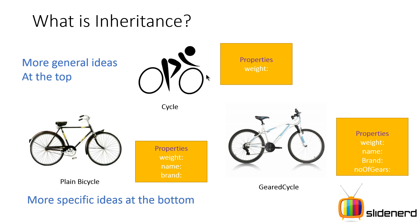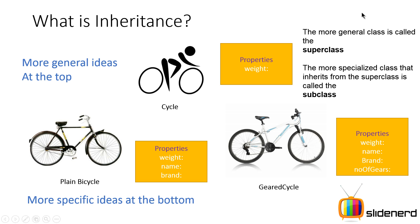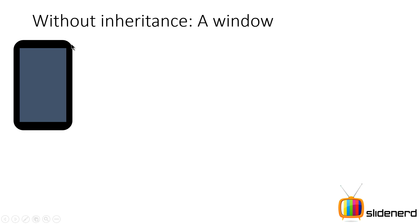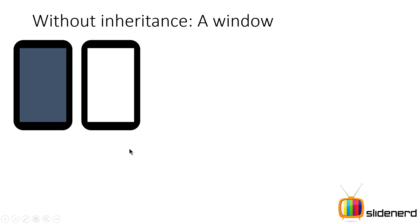Now let me show you a clear example of what happens without inheritance using a real-world example. I have my Android phone — or any phone that runs Java. This phone is currently showing nothing. What I want to do is display a blank window on the screen. So let's talk about how that appears: you have your device and a white screen that the user sees.